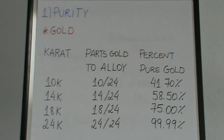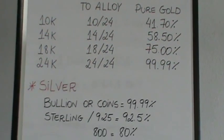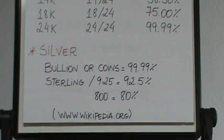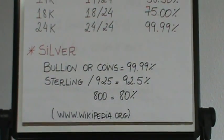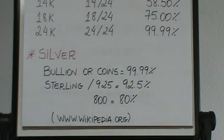Silver is basically measured in two purities. One being coins or bullion, which are pure 99.99%. And sterling, which is 92.5%. You might see items that are marked 800, which are 80% silver. But for the most part, you're going to be dealing with pure silver or sterling.